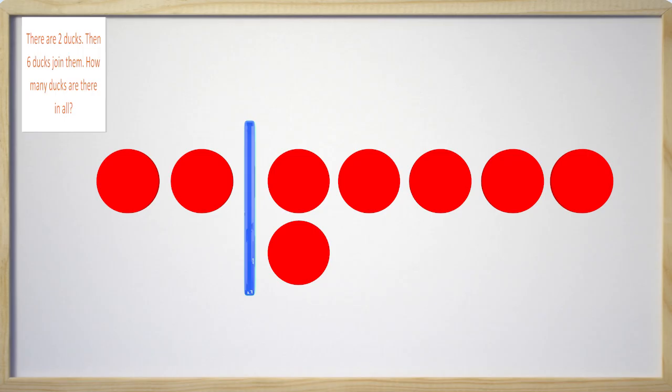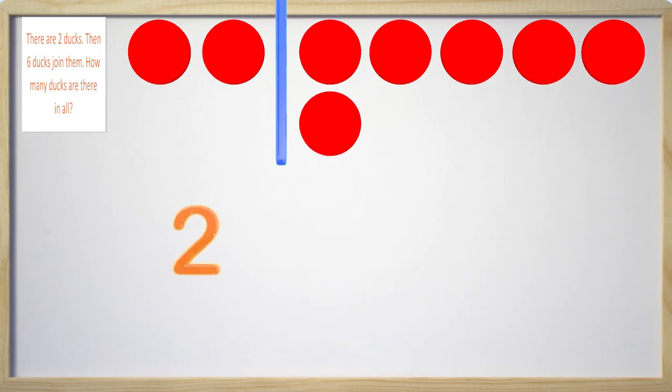Before we find out I think it would be fun to write an equation that also goes with our circle drawing and the word problem. We have two ducks that are already there. Then six more ducks came which means we are going to add those ducks. We are going to join those two groups together, the ducks that were already there and the ducks that came later.